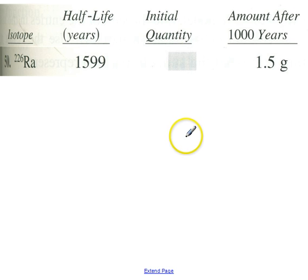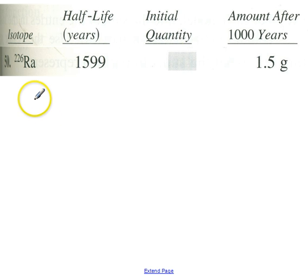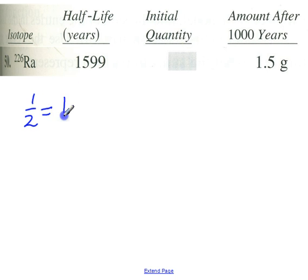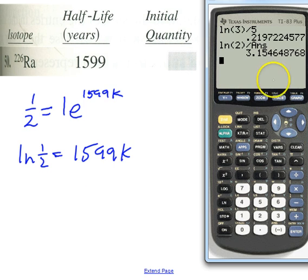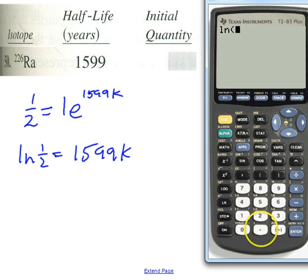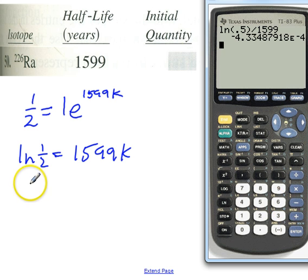One more: a half-life problem. We have a radioactive isotope with a half-life of 1,599 years. That means every 1,599 years we have half of what we started with. If we start with 1, then one-half equals 1 times e to the 1,599k. The natural log of one-half equals 1,599k. Using the calculator: the natural log of 0.5 divided by 1,599 — notice we get a negative number because this is exponential decay.